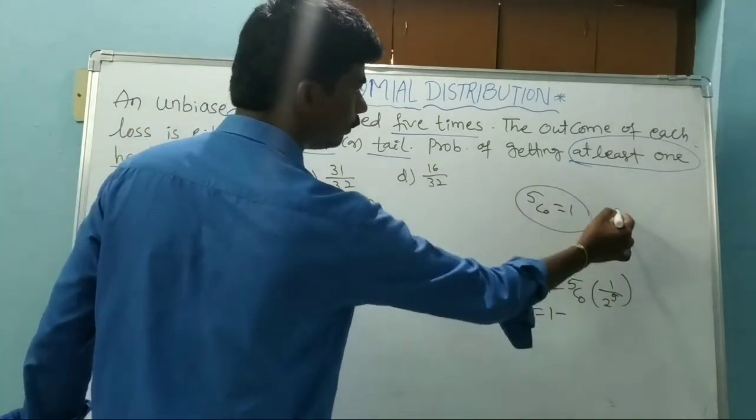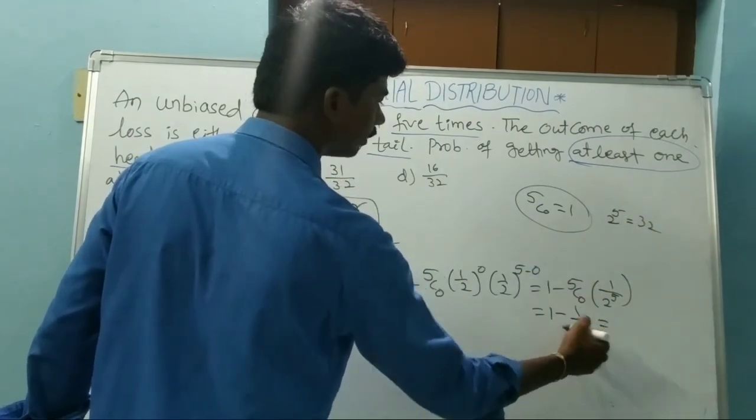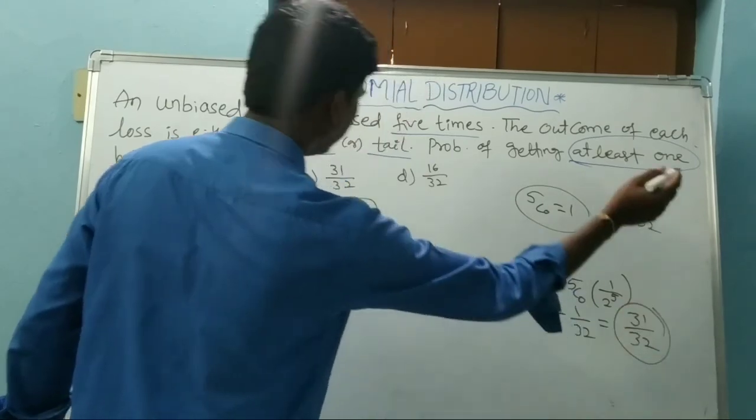See here. One by two power five, that equals thirty two. One by thirty two. The answer is thirty one by thirty two.